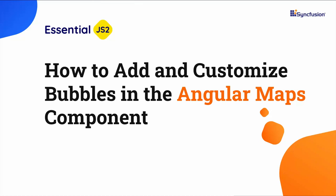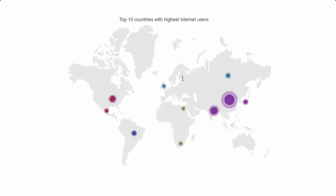Hi everyone, welcome back. In this video I will show you how to add and customize bubbles in the Syncfusion Angular Maps component. Look at this example — here a world map displays bubbles that provide information about the top 10 countries having the highest number of internet users. These bubbles are differentiated by color and have custom sizes.